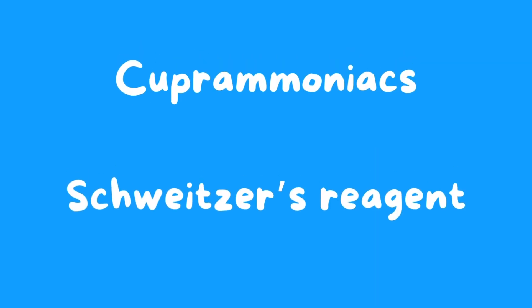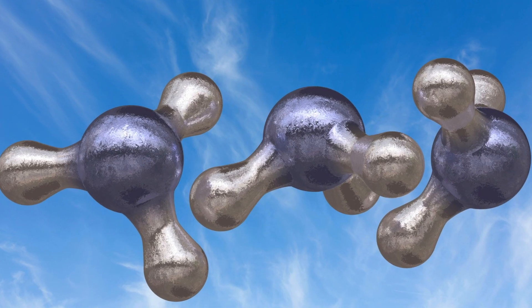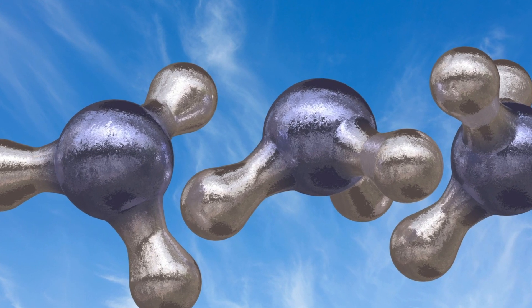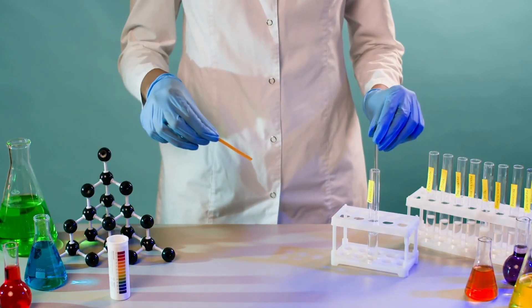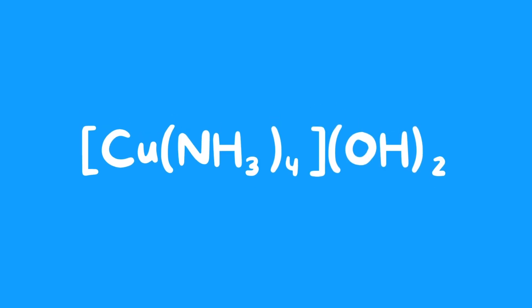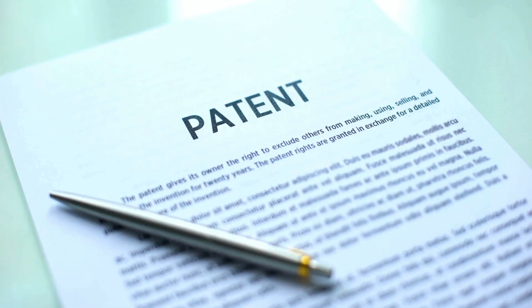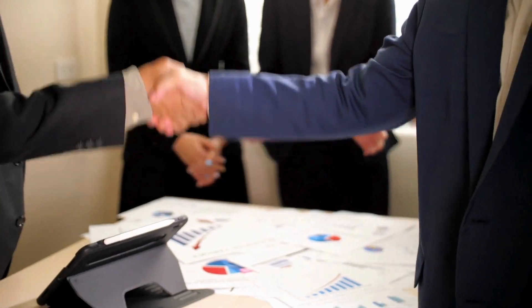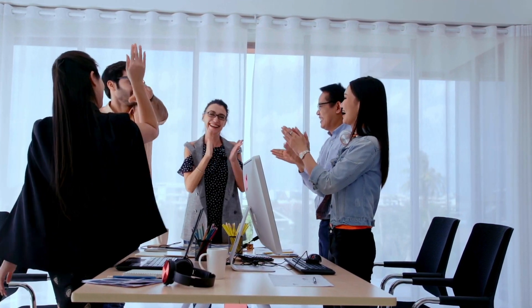Cellulose can also be solubilized in cuprammoniac solutions such as Schweitzer's reagent, invented by Matthias Schweitzer in 1857. The production process of cuprammoniac rayon consists in the dissolution of cellulose in an ammoniacal solution of copper hydroxide or sulfate. This complex is formed and is able to solubilize cellulose, which can then be extruded in acidic environments as in the viscose process. Schweitzer never patented the process, which made the fortune of many entrepreneurs until the advent of the viscose process, which was cheaper and more efficient.